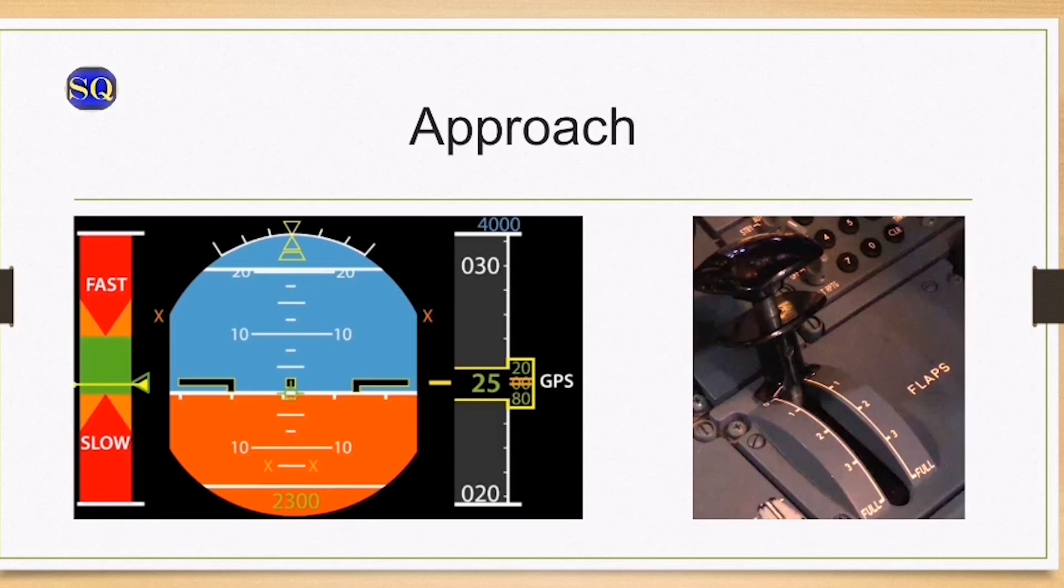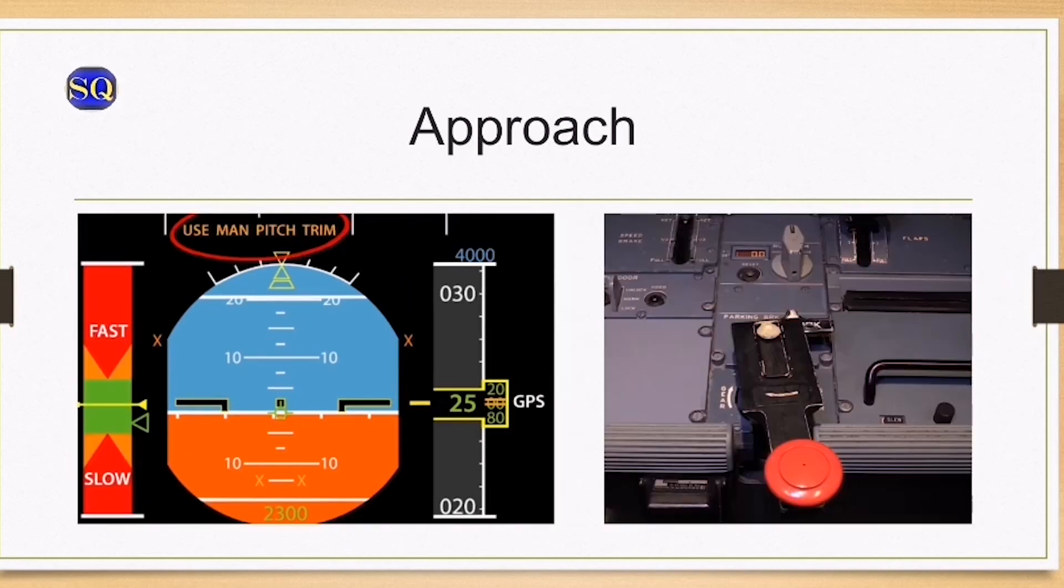And on the approach, the flight crew must fly on a stabilized approach and change the aircraft configuration when wings are level. Fly to the lower part of the green band, then extend the flaps, and do this for all the flaps.